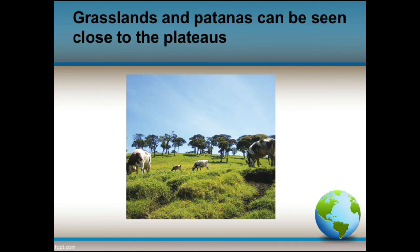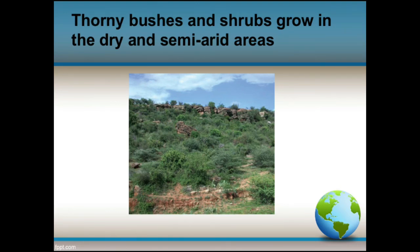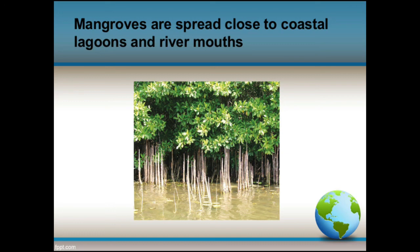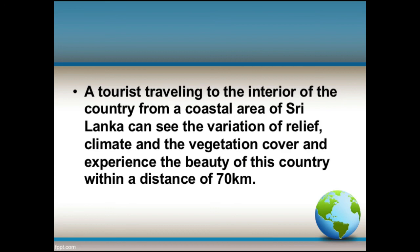Examples of grasslands include Horton Plains and Ambewela. Thorny bushes and shrubs grow in the dry and semi-arid areas where a dry climate exists — example: Mannar and the surrounding areas in the northwestern part, as well as the Hambantota area in the southwestern part of Sri Lanka. Mangroves are spread close to coastal lagoons and river mouths — examples include Kalametiya, Bundala, and Muthurajawela.